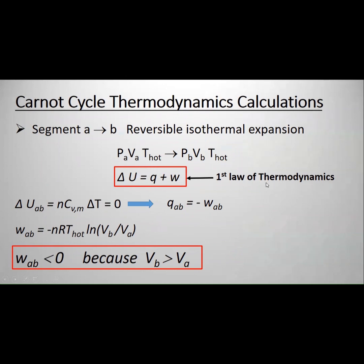According to the first law of thermodynamics, delta U is zero, so Q will equal negative W. For isothermal conditions, W equals negative N R T ln(V_B over V_A).